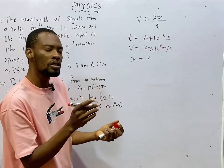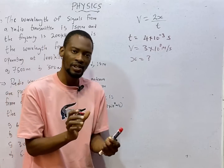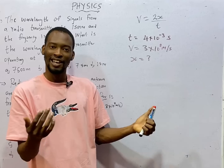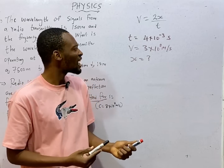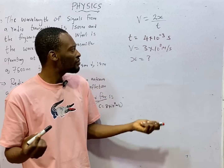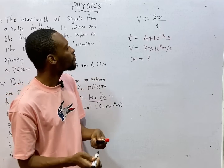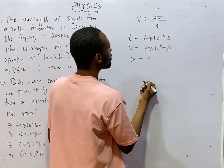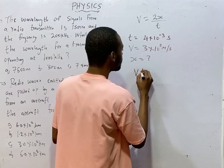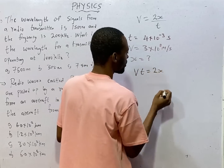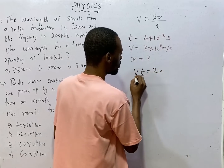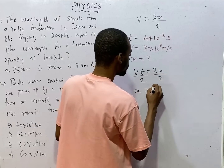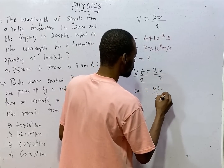The time is 4 × 10⁻³ seconds and the velocity is 3 × 10⁸ meters per second. We are asked how far the aircraft is from the antenna — 'how far' means distance. Making S the subject: S = VT / 2. That is 3 × 10⁸ times 4 × 10⁻³, divided by 2.